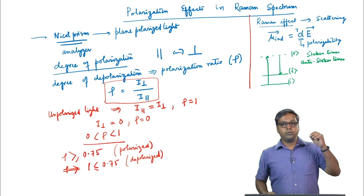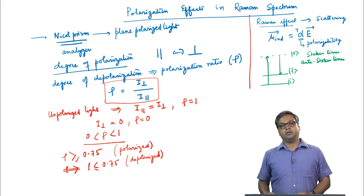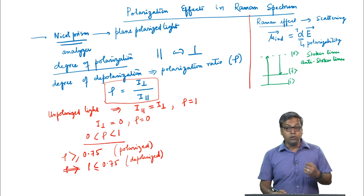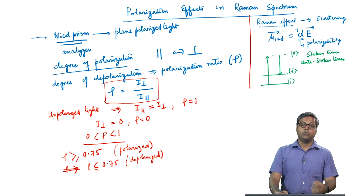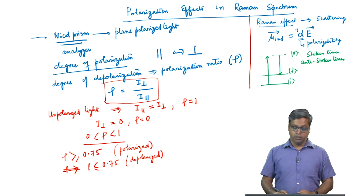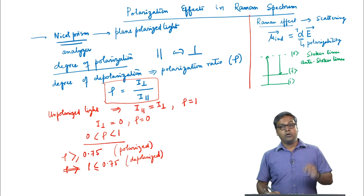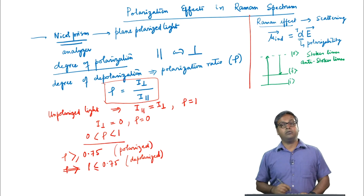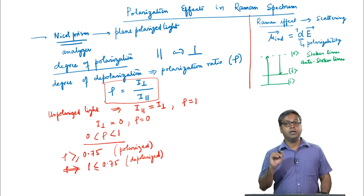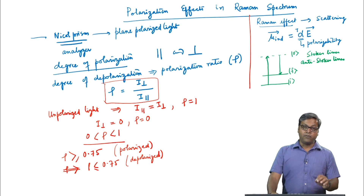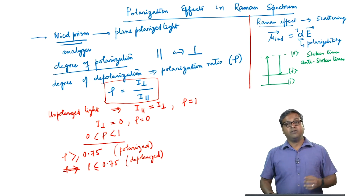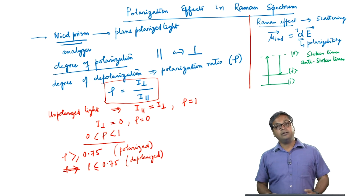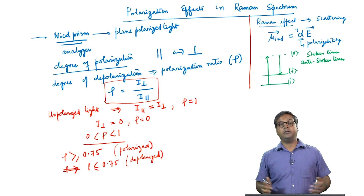We further discussed rotational Raman spectroscopy and the effect of nuclear spin on rotational Raman spectra. We looked into the polarizability tensor and discussed the polarizability ellipsoids. Finally, we discussed the Raman activity of vibrations and vibrational Raman spectroscopy.